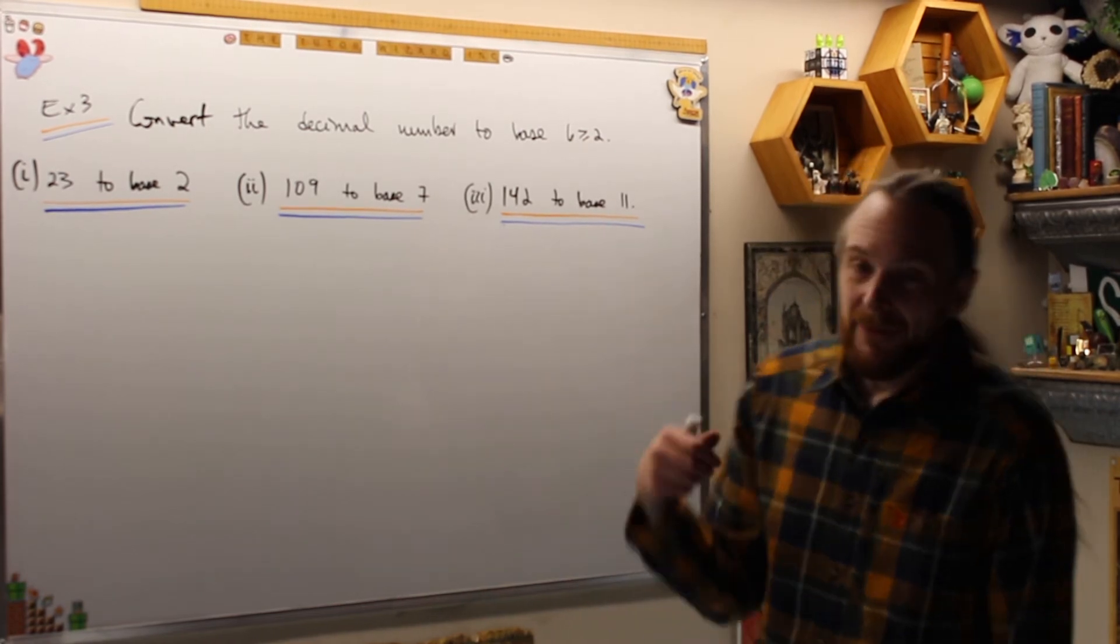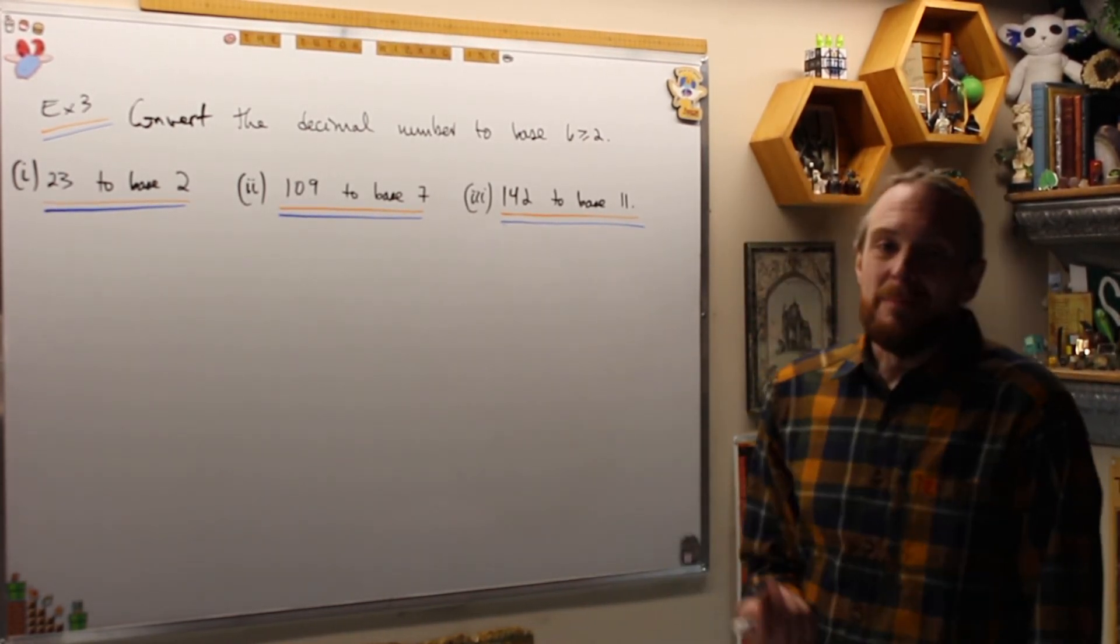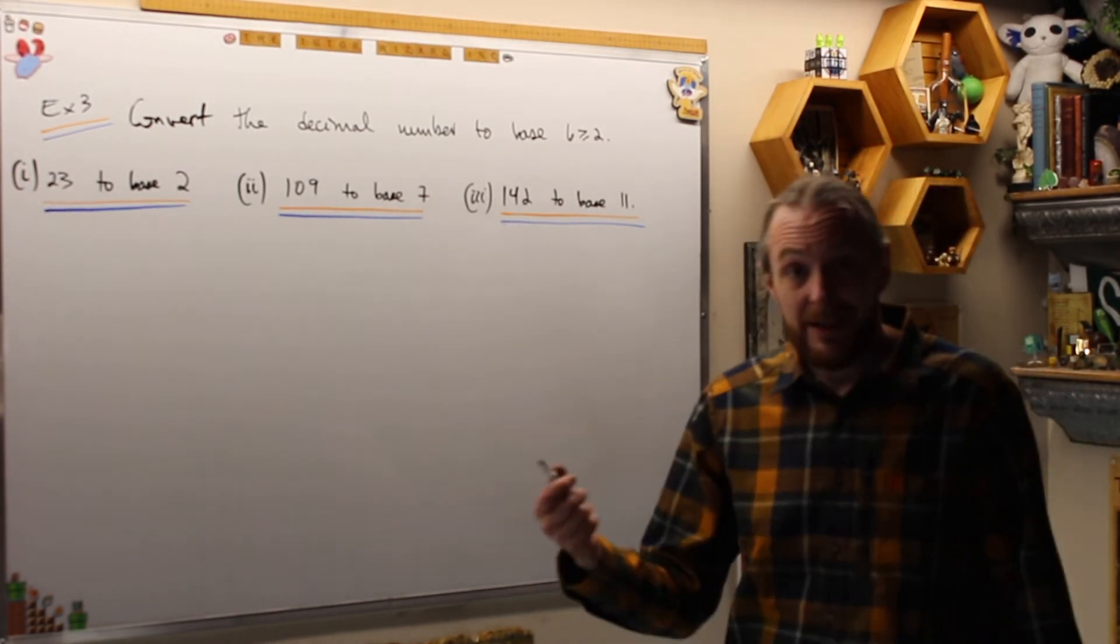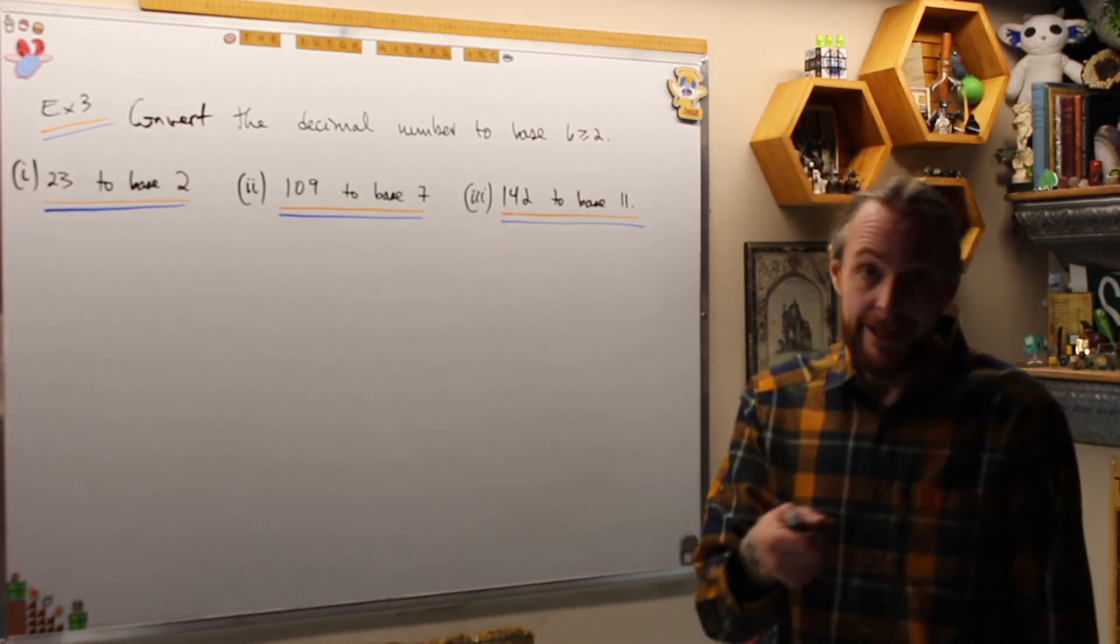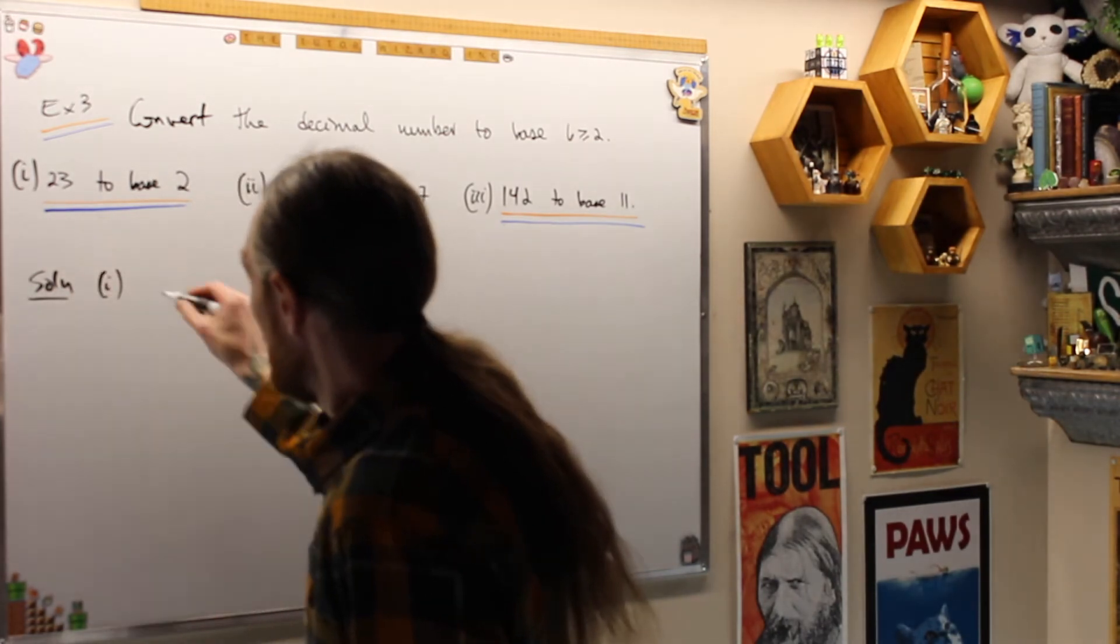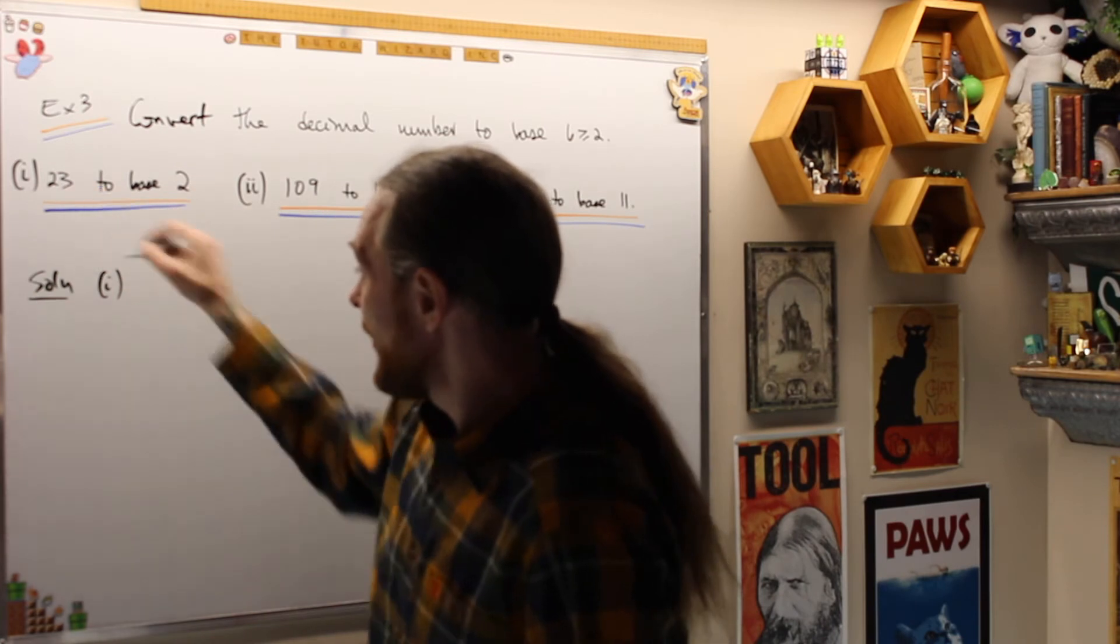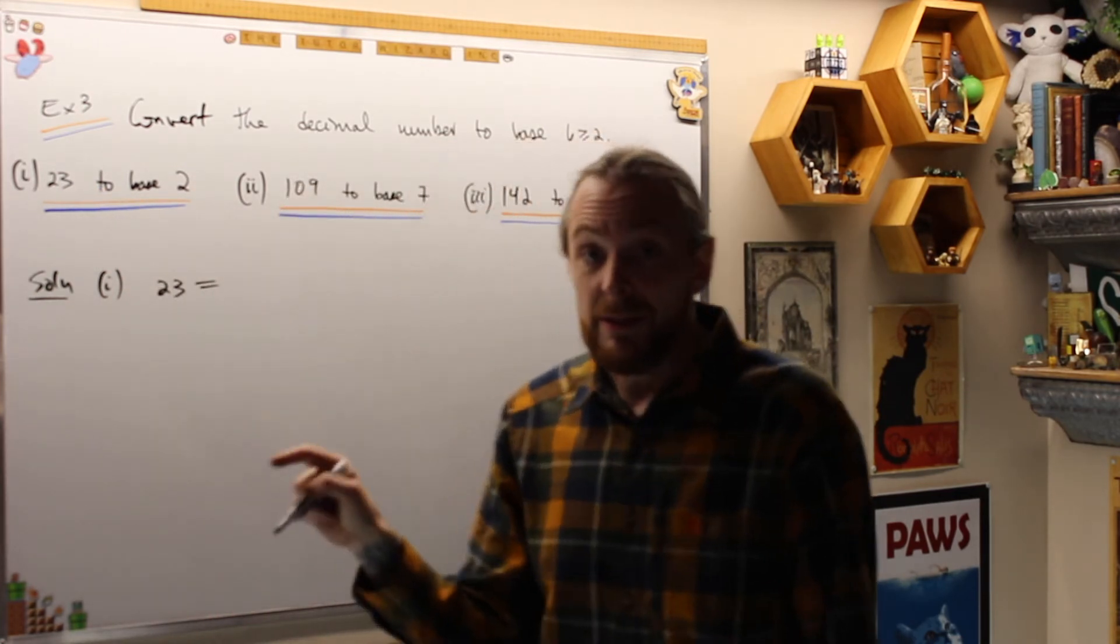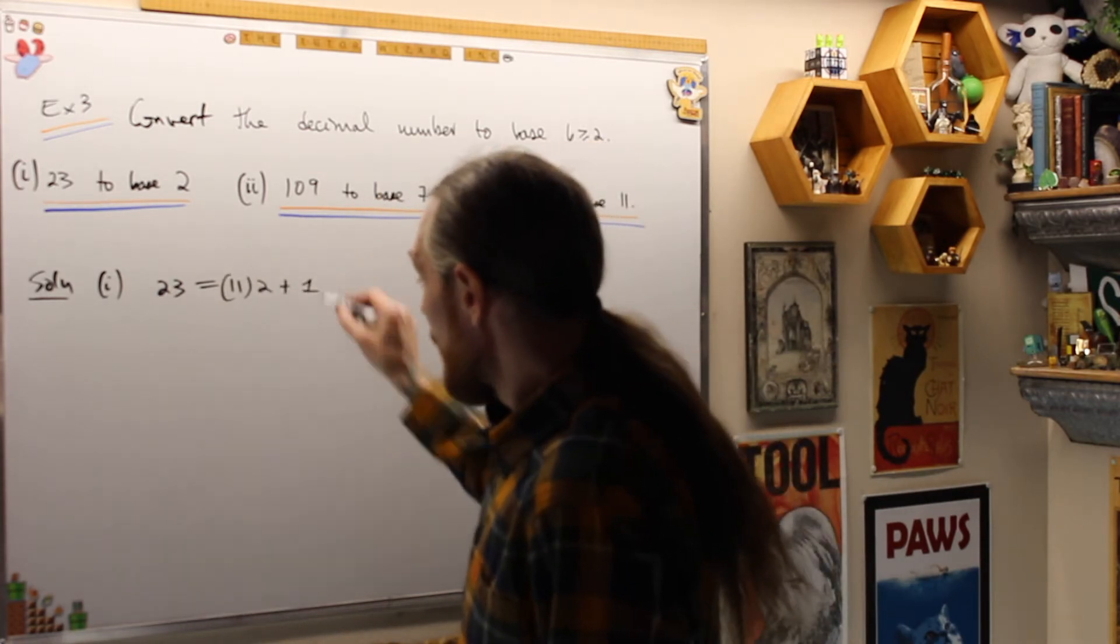Example 3 is going to be convert from the decimal representation now to base B representation. So how do we do this method? We're going to use iterations of the division algorithm, finding quotient remainders when we divide a number B into a number A. Solution 1. So I want 23 into base 2. So I'm going to divide 2 into 23 to get a quotient and a remainder. 2 goes into 23, 11 times 2 is 22 plus a remainder of 1.